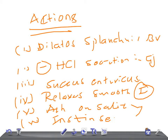To revise: VIP helps in the dilatation of splanchnic or peripheral blood vessels. Second, it inhibits hydrochloric acid secretion in gastric juice. Third, it stimulates the secretion of succus entericus with a large amount of electrolytes and water. Fourth, it relaxes the smooth muscles of the intestine. Fifth, it augments the action of acetylcholine on the salivary glands. And sixth, it stimulates insulin secretion. Thank you for watching.